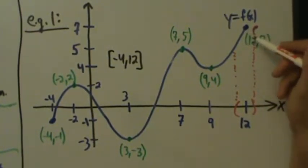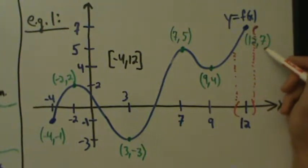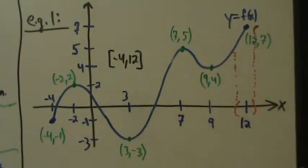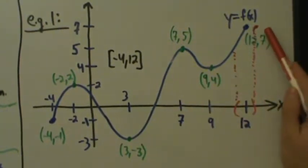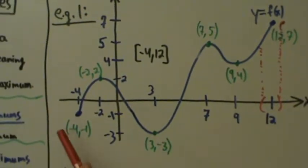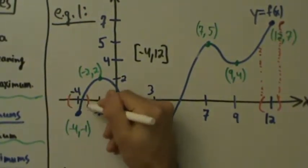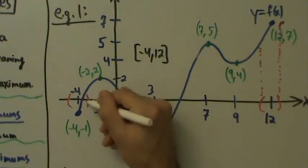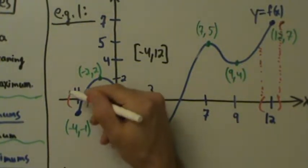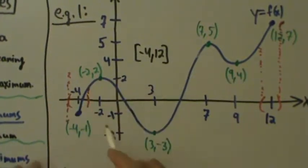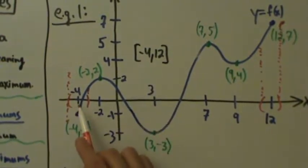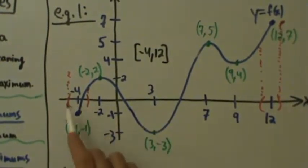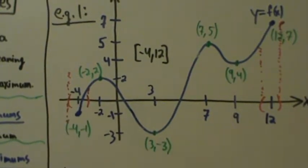But this endpoint is a global max, because 7 is the largest value of the function we ever get — all other y-coordinates are smaller than 7. So we can have a global max at an endpoint, but not a local max. Likewise, the left endpoint at x equals negative 4 is not a local min, because if we try to put a small interval around x equals negative 4, there's nowhere to go to the left — the function is not defined there. Negative 4 is the smallest x-value where this function is defined, so we cannot put a small open interval around it.